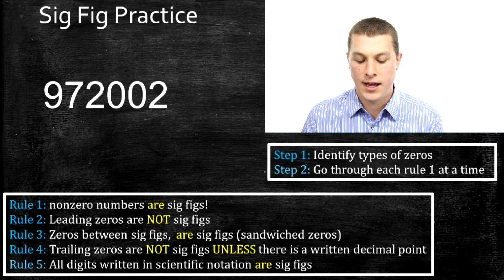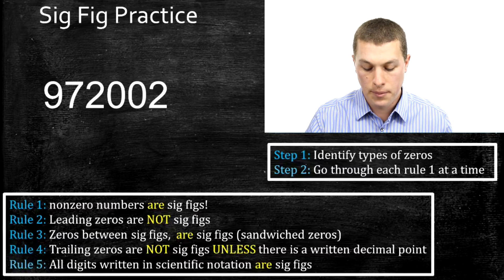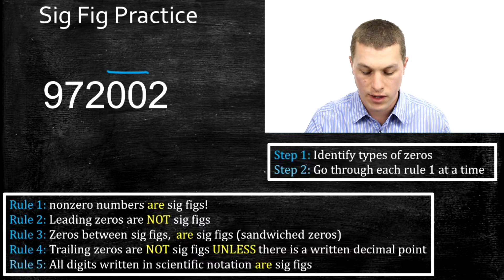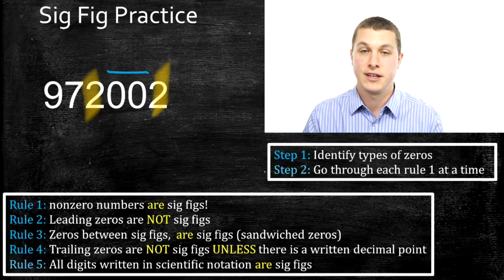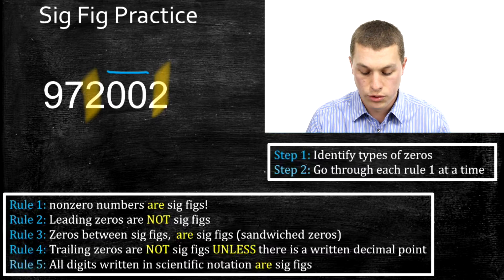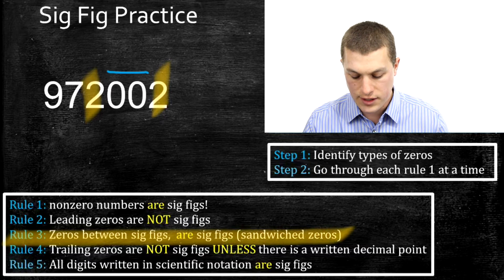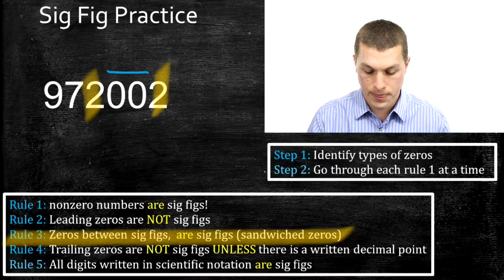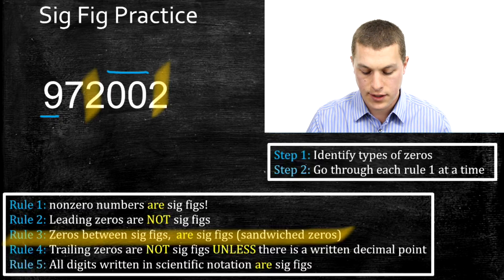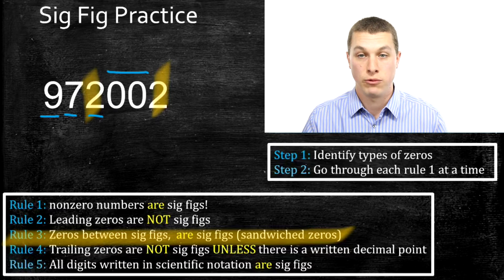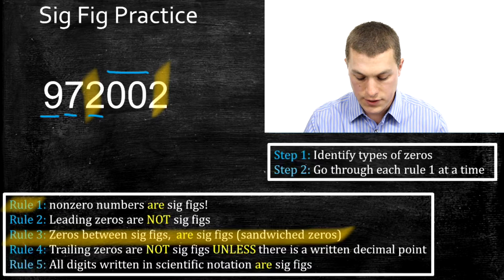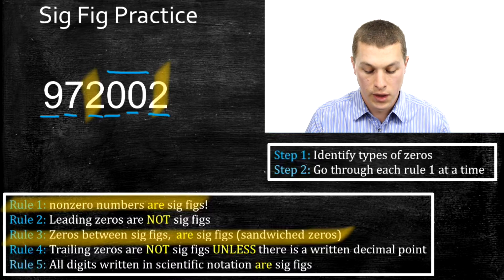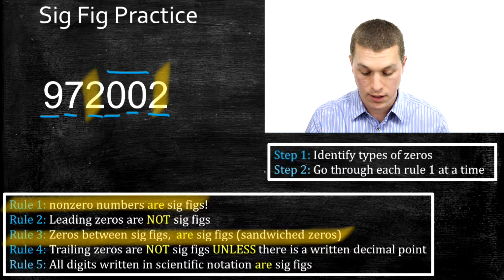The next number is 972,002. Again, we're going to start by identifying the different types of zeros. Here these zeros are what we call sandwiched — there's a two in front and a two behind, so they're in between sig figs. Which rule deals with sandwiched zeros? Rule three. And what does it tell us? They are sig figs — zeros between sig figs are significant figures. So all the non-zeros are sig figs by rule one, and the sandwiched zeros are also sig figs by rule three. We have six digits, and all of them turn out to be significant — so we have six sig figs.